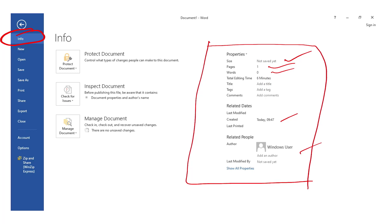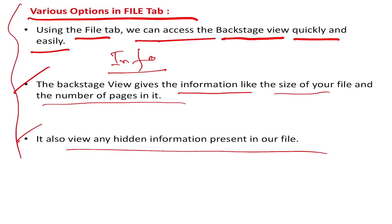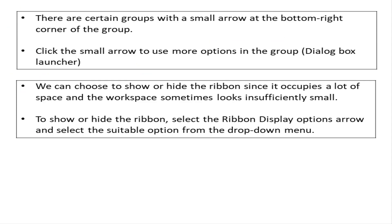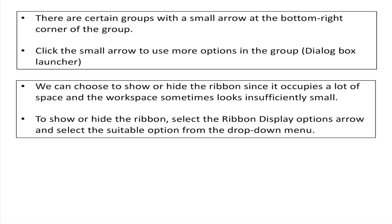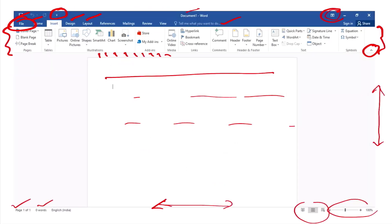In the Backstage view, you can see the Protect Document option. This is the password protect option. If you need to restrict who can open, edit, or read the file, you can use this password option. There are various options available in the File tab.